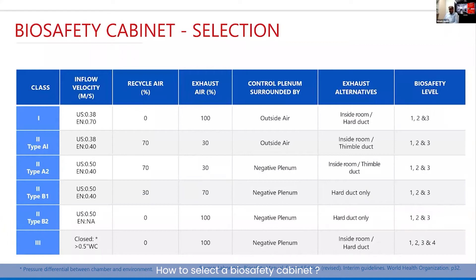What I'm giving you here is a summary of what the different biosafety cabinets mean and where they can be used. The velocity is defined by the standards — the standards we are talking about are NSF 49 and the EN standards — and the inflow velocities are clearly defined.